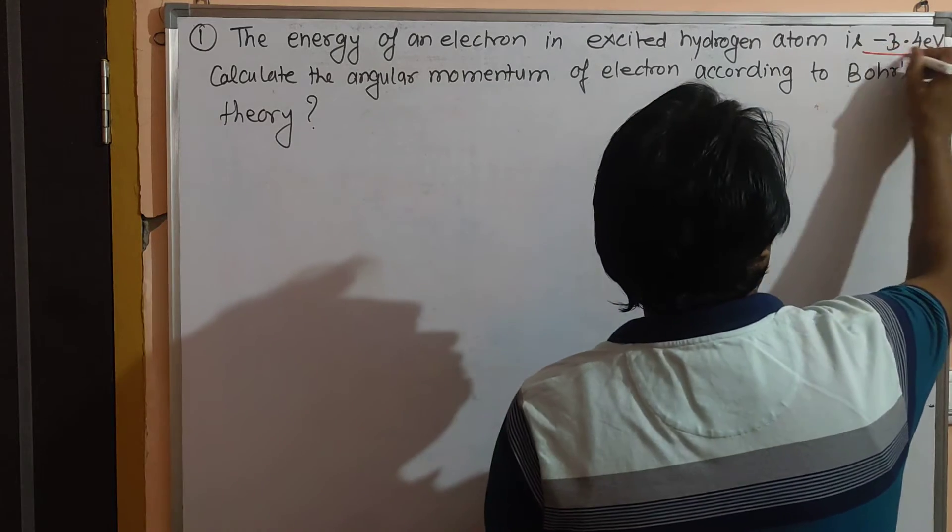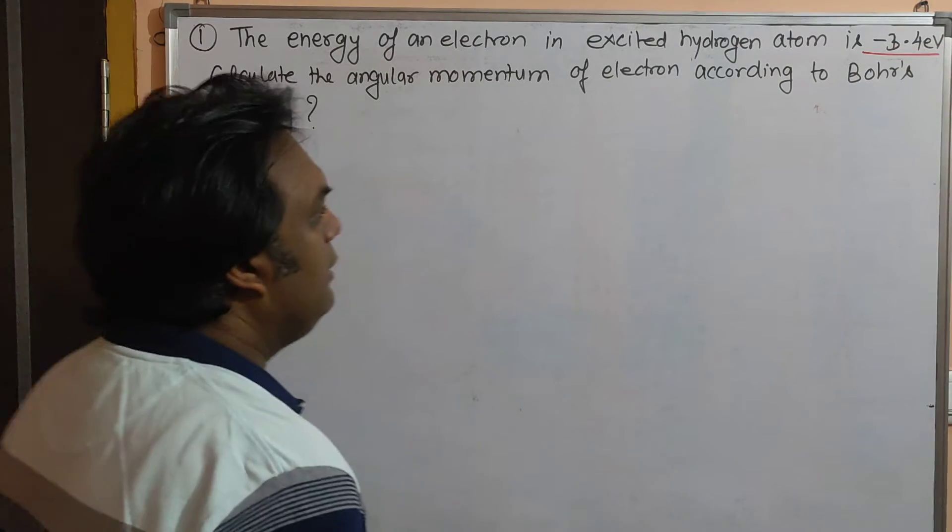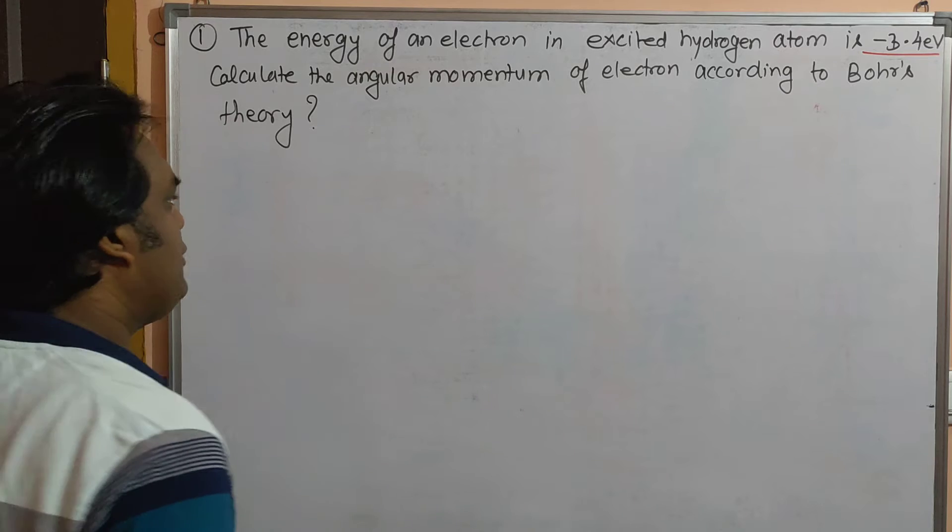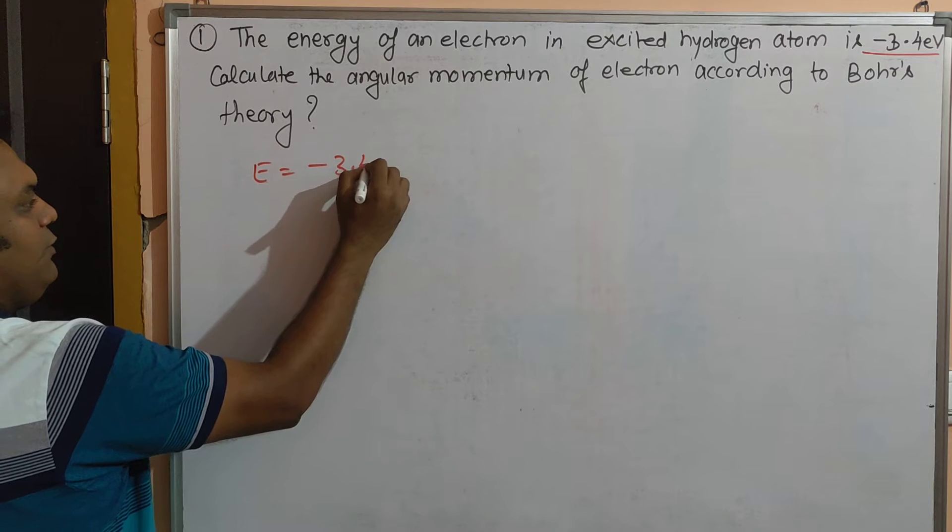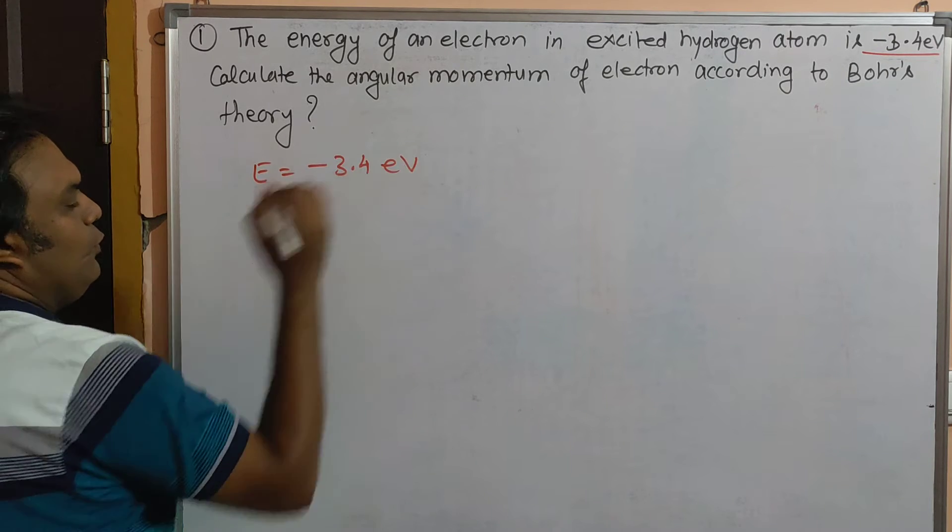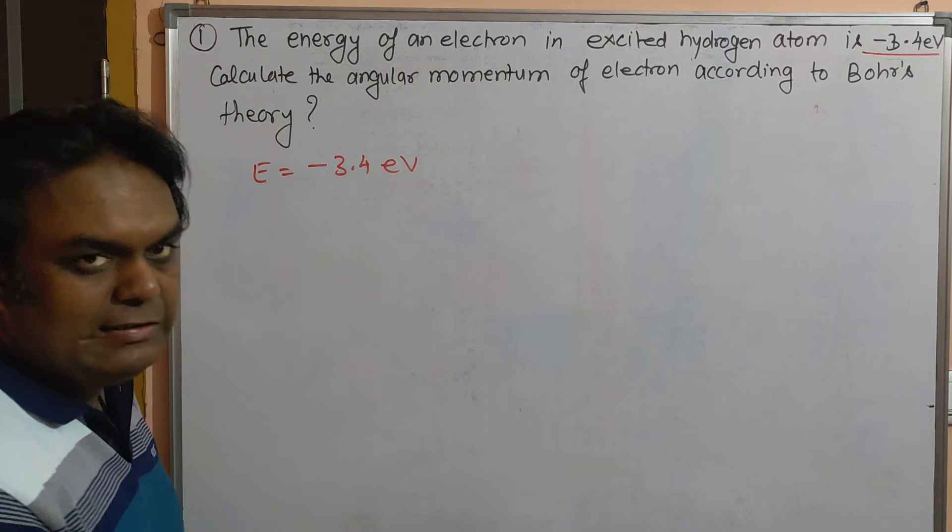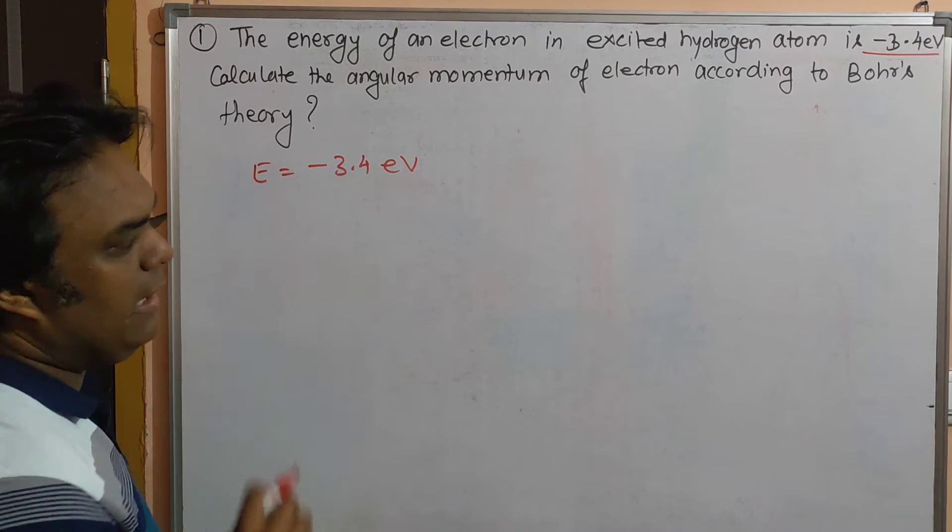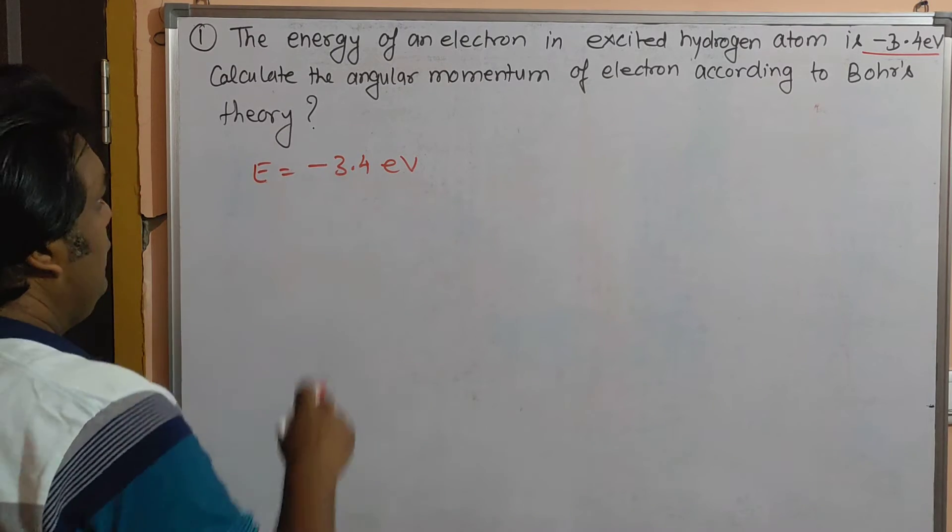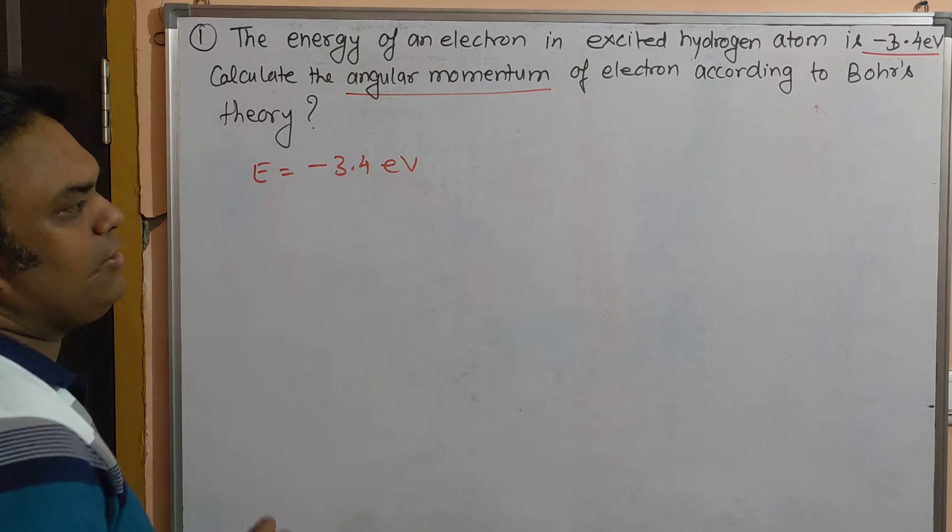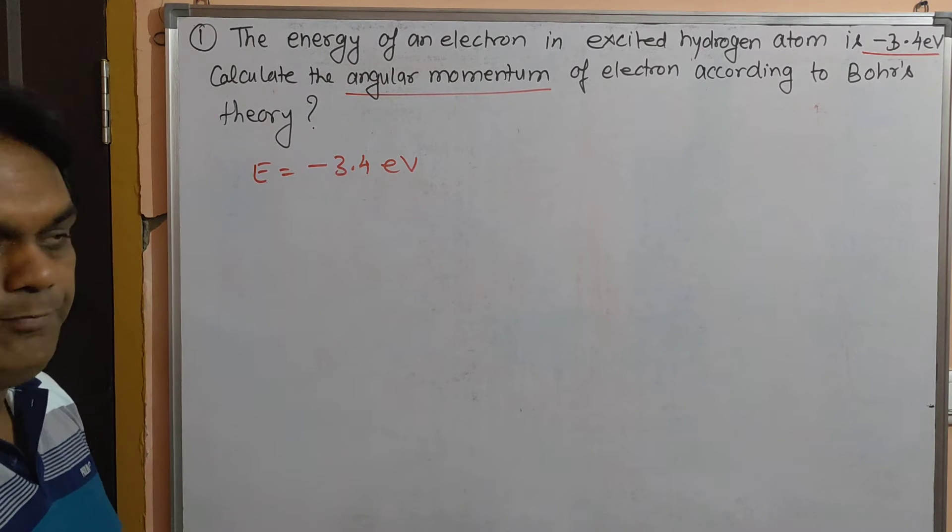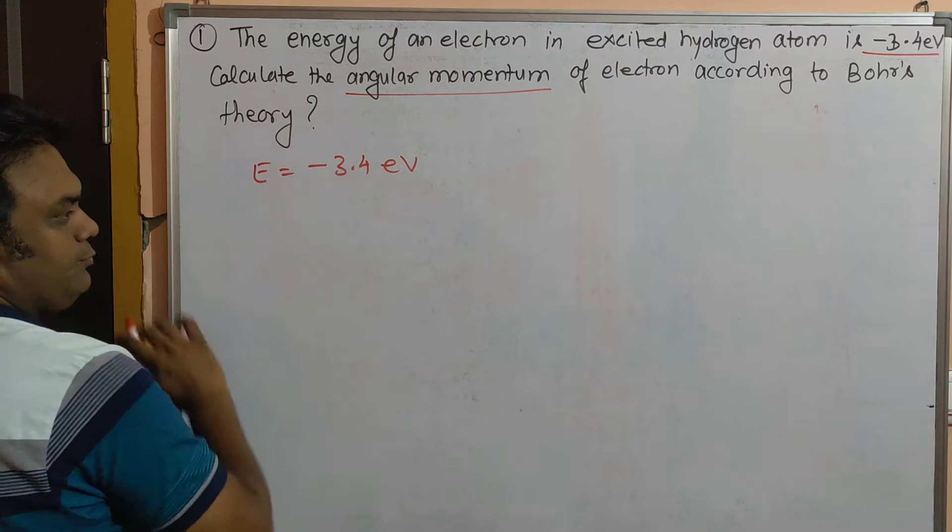...minus 3.4 electron volts. Calculate the angular momentum of the electron according to Bohr's theory.